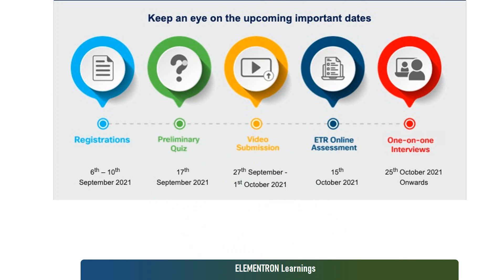We have seen registrations, preliminary quiz, then followed by video submission which happened recently. So now after video submission, we are going to the ETR online assessment, which is the last second step to secure a position of intern as well as full-time employment offer from Cisco Systems India. After the results are announced, we can expect ETR online assessment on the 15th of October, which is a few days from now.